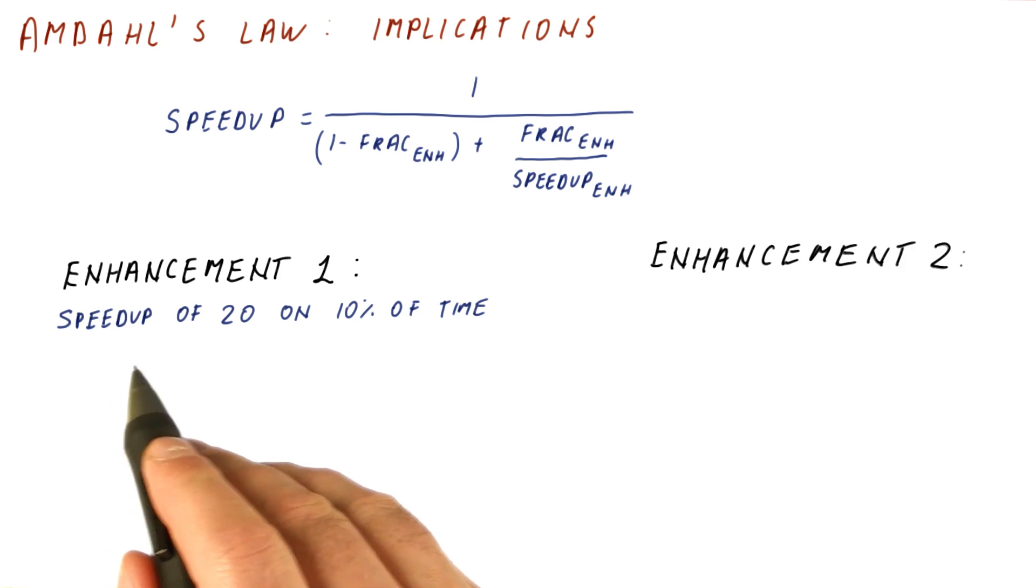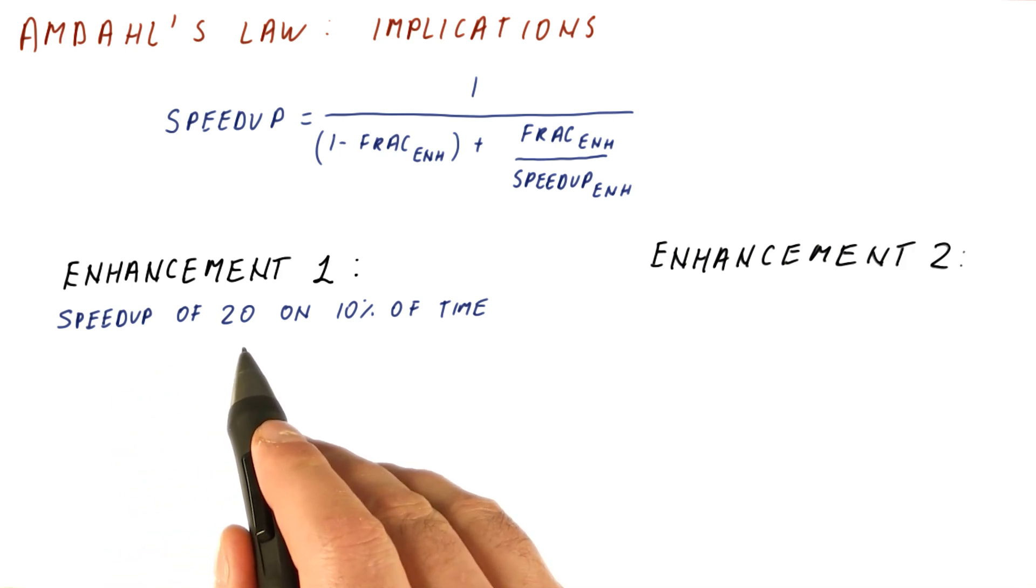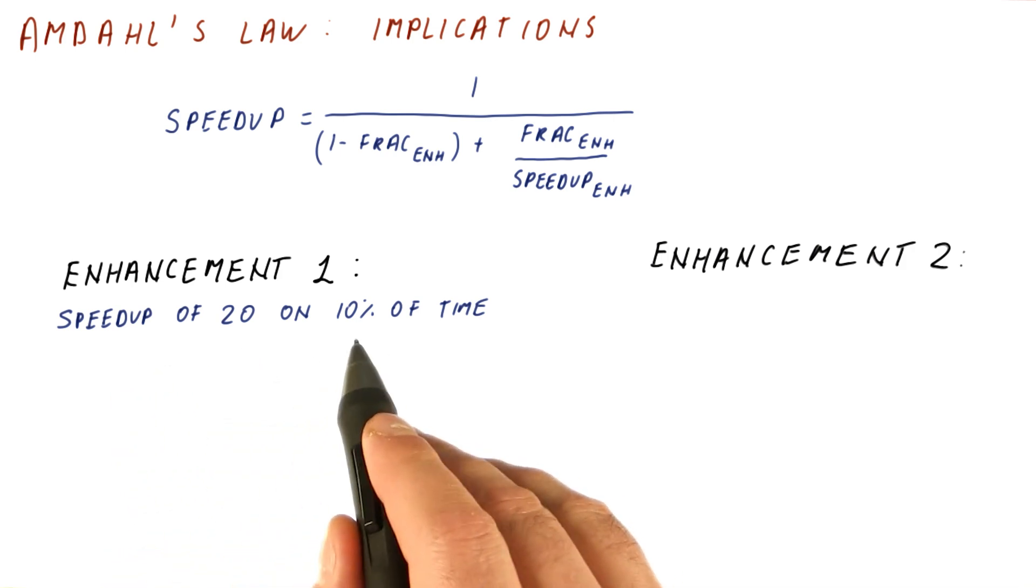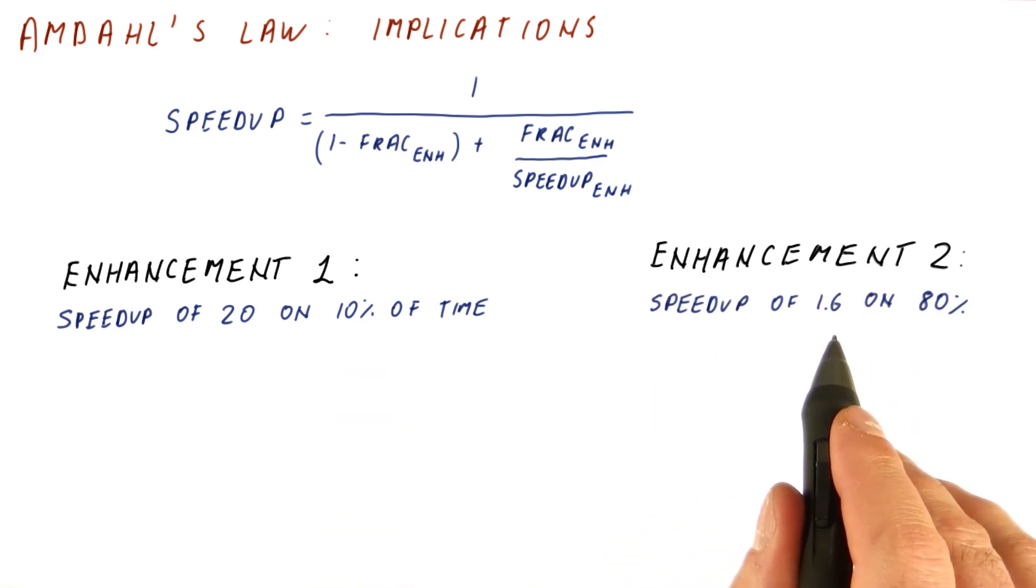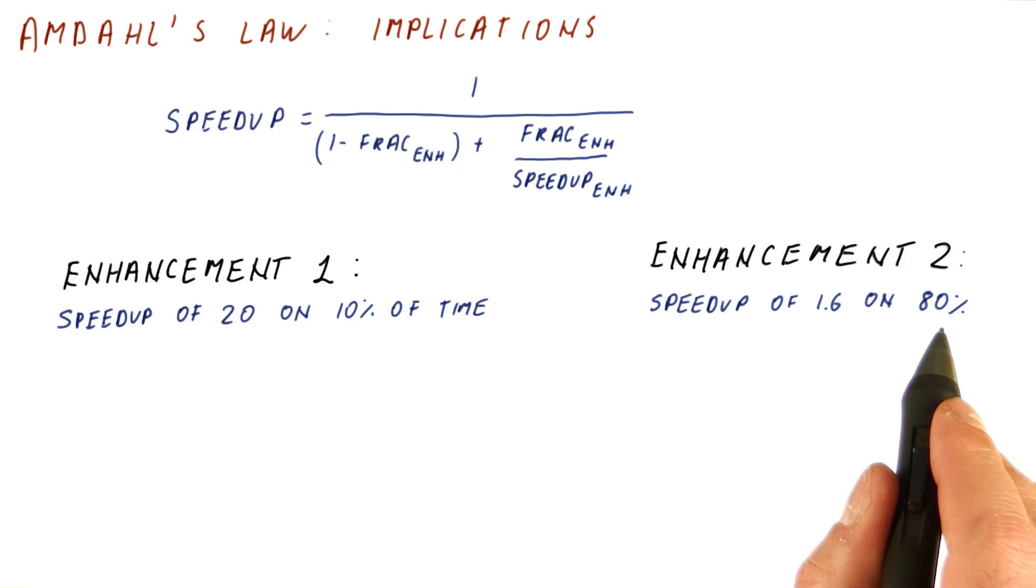The first enhancement is giving us a speedup of 20, which is an extremely large speedup, on 10% of execution time. Enhancement two is giving us a speedup of 1.6 on 80% of execution time.